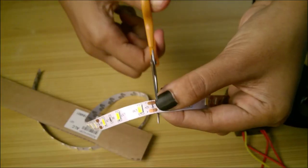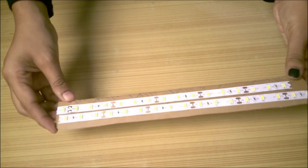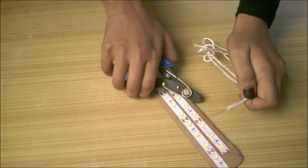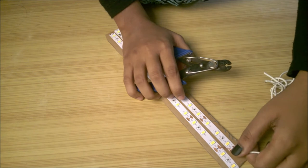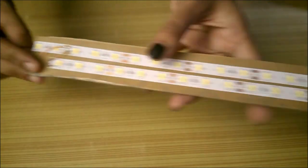So, I cut two pieces from the strip after measuring it. I peeled off the covering tape from its back and stuck it to the cardboard. Soldered the positive and negative terminals of both the strips using a wire. I used 0.75 square mm solid wire.